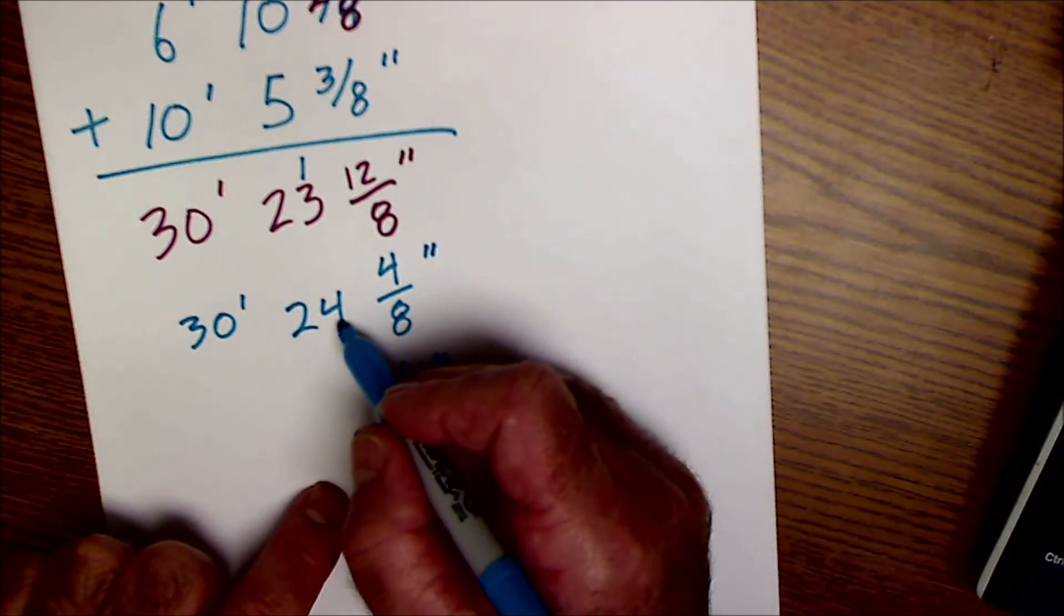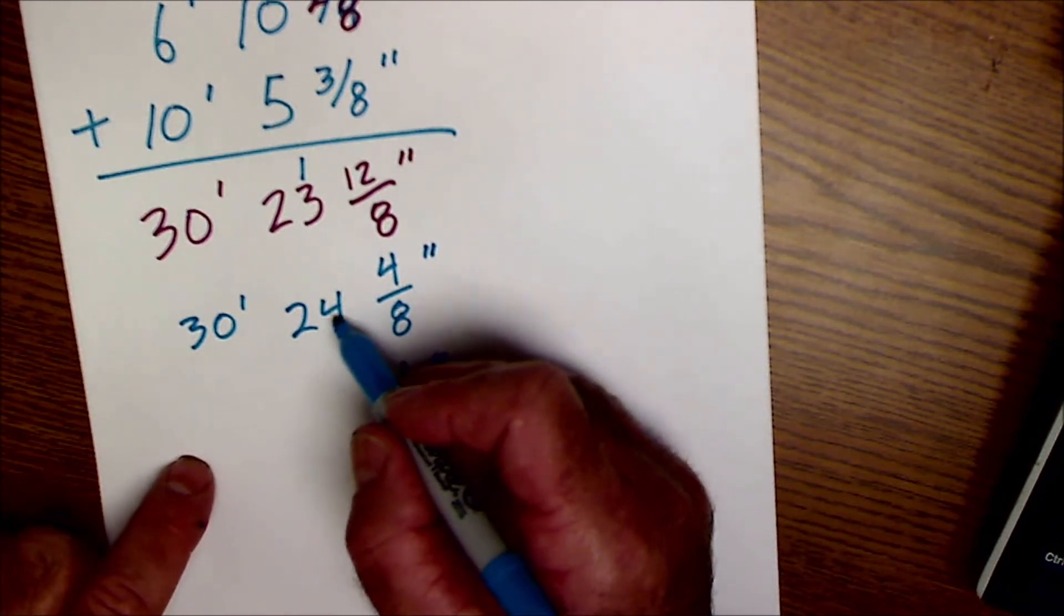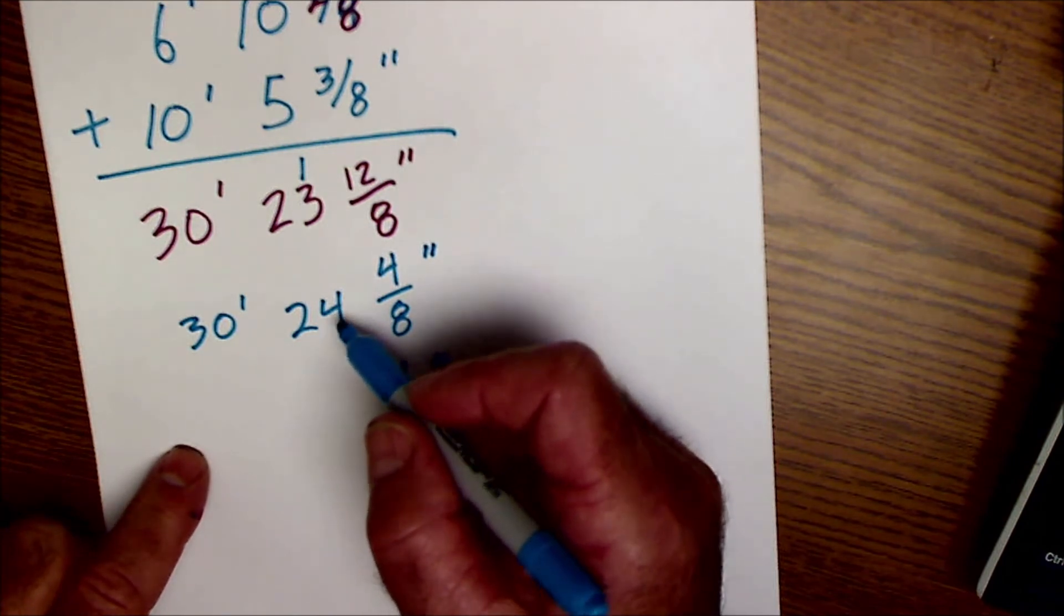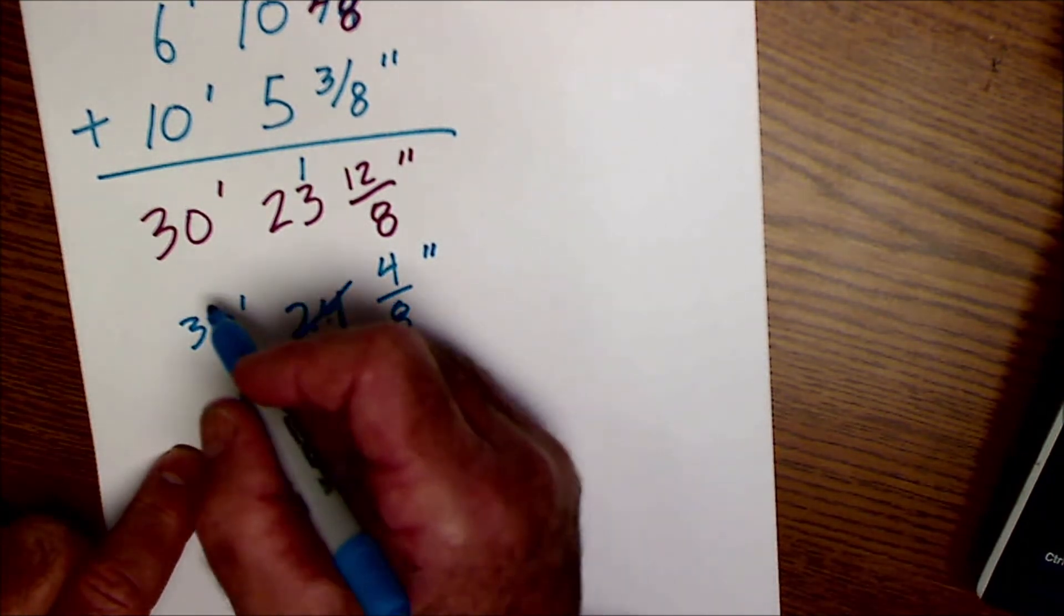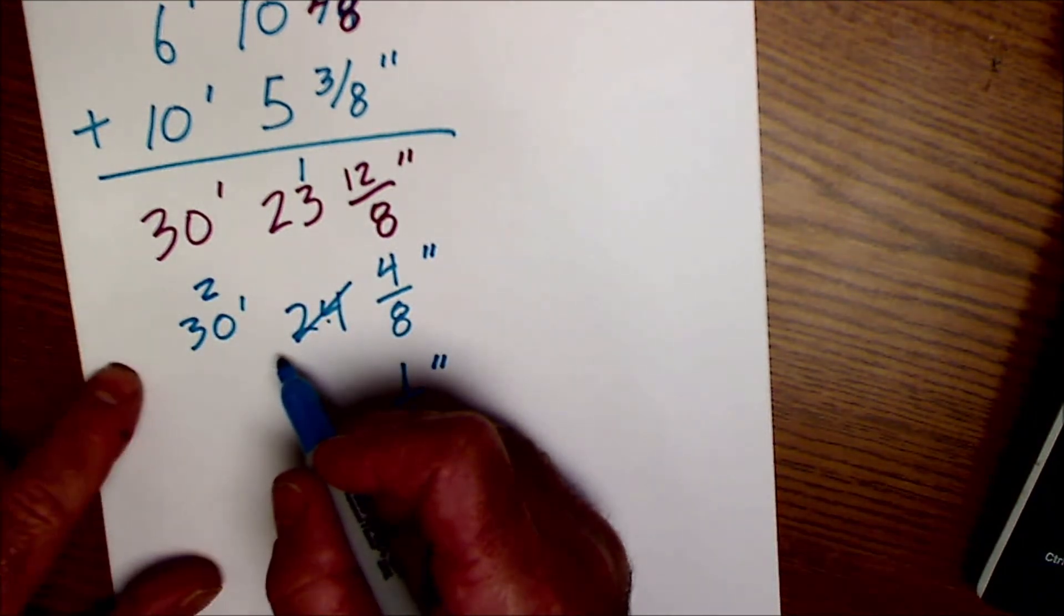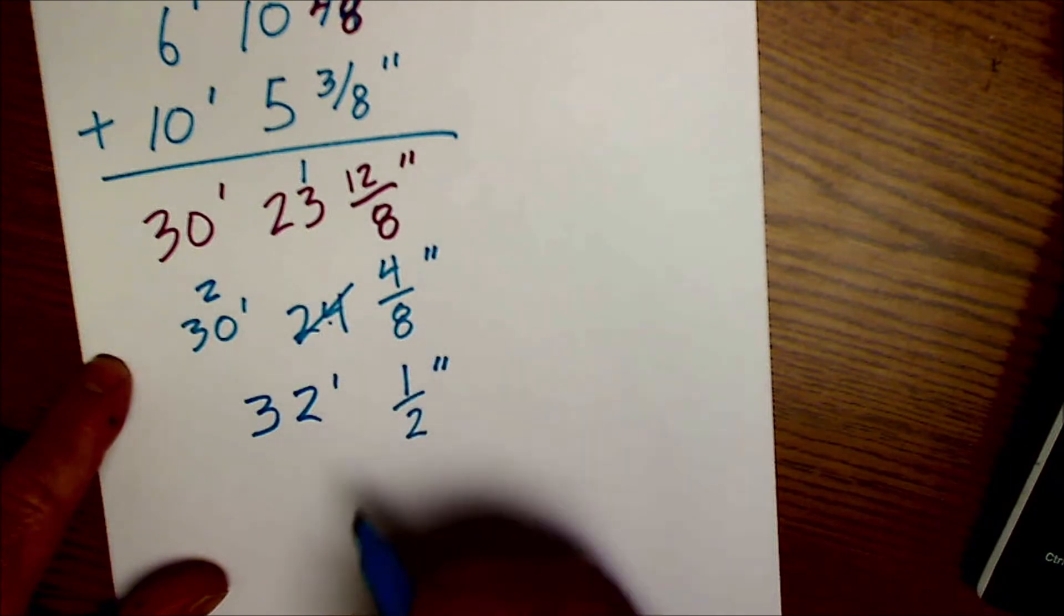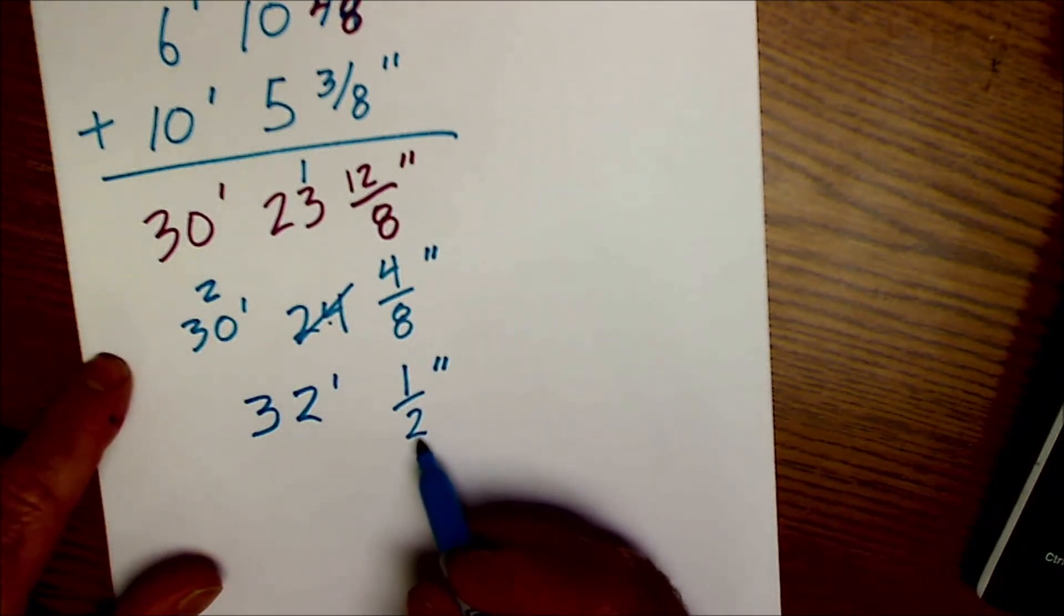Twelve goes into here twice. Twelve times two is twenty-four. So twelve is going to go into here twice. I'm going to pull both those twelves out with nothing left over. And there are two twelves getting pulled out. So my final answer will be that thirty and the two, or thirty-two feet and a half inch.